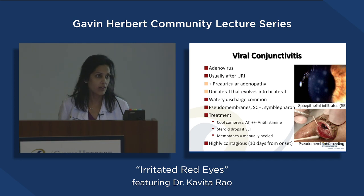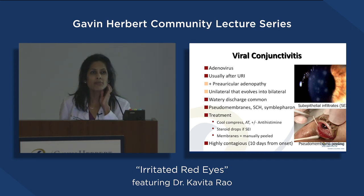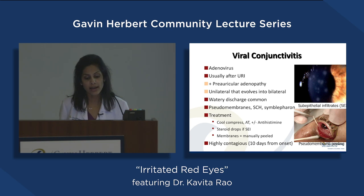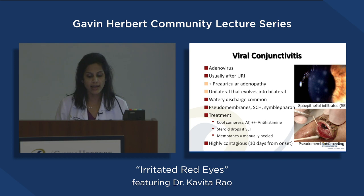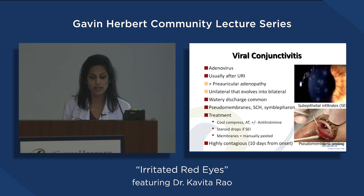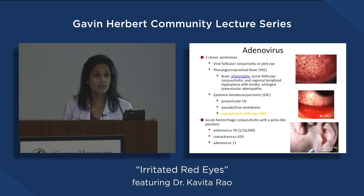With viral conjunctivitis, people usually have tender lymph nodes. Symptoms typically start in one eye and then spread to the other. We tell people to avoid touching the eye — it usually goes away on its own, but it's very contagious. That's why we tell kids to stay home from school and advise adults to take a few days off work.